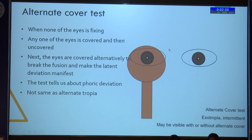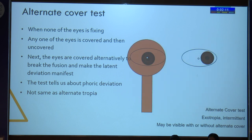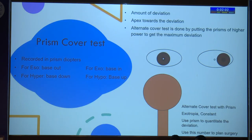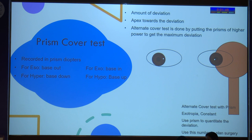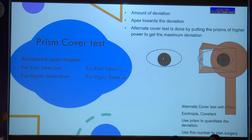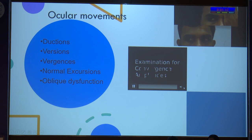The alternate cover test is mainly for breaking fusion and for phoric/latent deviations. It should not be done in all cases because it will show an alternate tropia regardless of whether the deviation is phoric or tropic. For the prism cover test, you measure the amount of deviation by putting prisms of progressively high power with apex towards the deviation. When you record, you note it with respect to the base — for esotropia you write base out, for exo you write base in, and likewise for hyper and hypo.